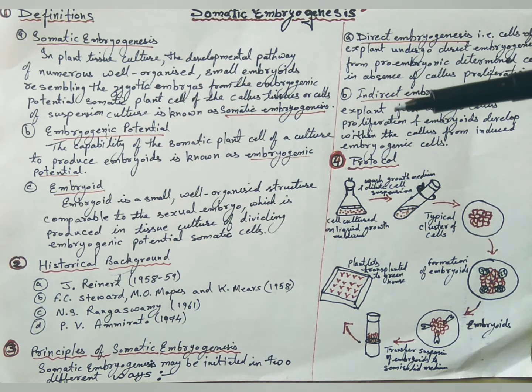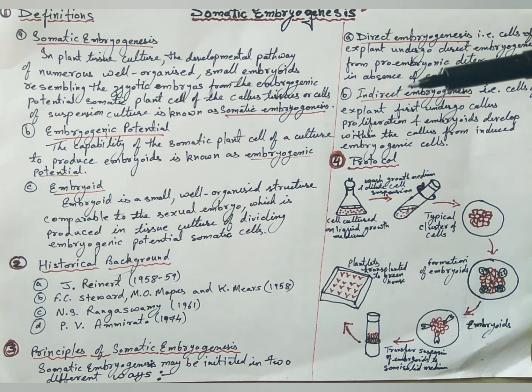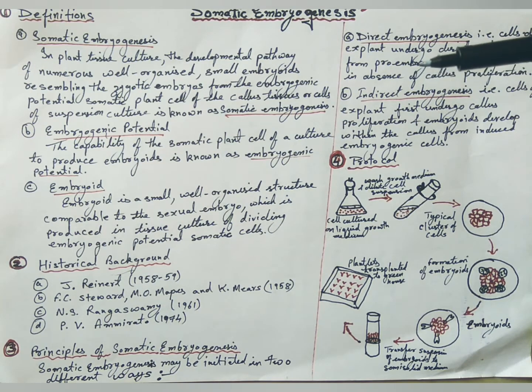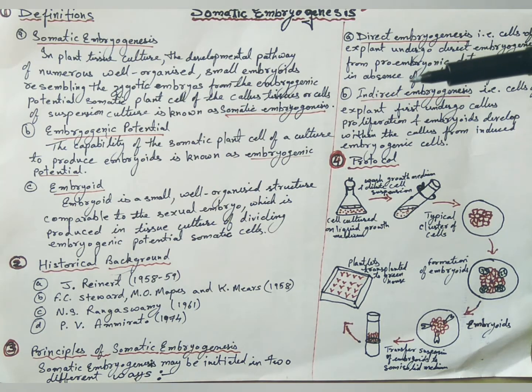In modern genetic terms, this means that the nucleus of every living somatic cell contains all the genetic information necessary to direct the development of the entire plant. J. Reinard, a German botanist in 1959, found organized small bipolar structures bearing cotyledons.